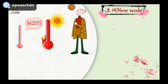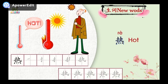Next word. Look at the picture. Can you understand its meaning? 热，meaning hot. Now let's learn how to write 热. Follow me. 一，二，三，四，五，六，七，八，九，十. You need to notice the key points: the first dot is on the left, and the last three dots are on the right.